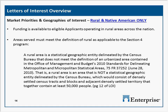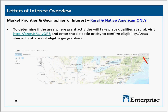For rural and Native American applicants: if you're interested in applying under that initiative, funding is available to eligible applicants operating in rural areas across the nation. The areas to be served must meet HUD's Section 4 definition of rural, which is on page 12 of the LOI. If you're unsure whether the area where your proposed grant activities will take place qualifies as rural, you can visit the website shown on page 12 of the LOI and enter your zip code or city to check.